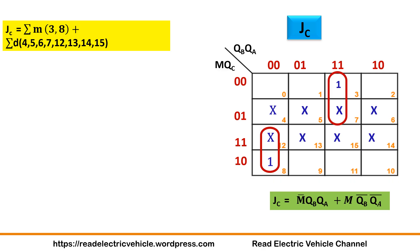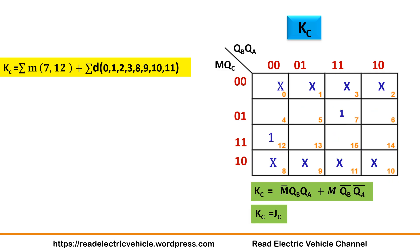Next we will plot for KC. Two ones are there, seven and twelve. Combine the ones together. Here you have for this combination M̄ into QB, QA plus for this one M into Q̄B, Q̄A. So JC equals KC, that is what we are getting.